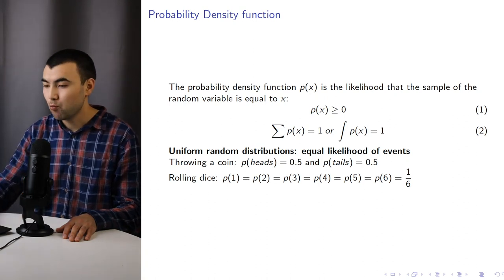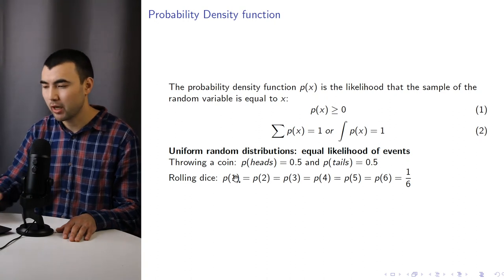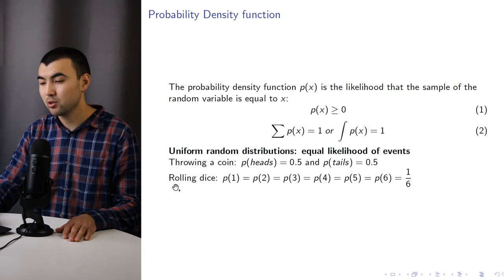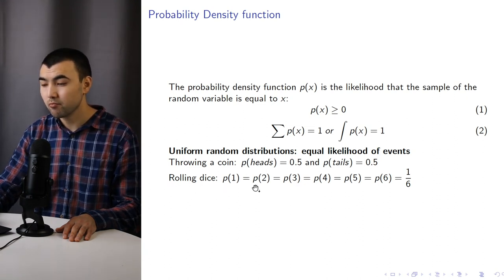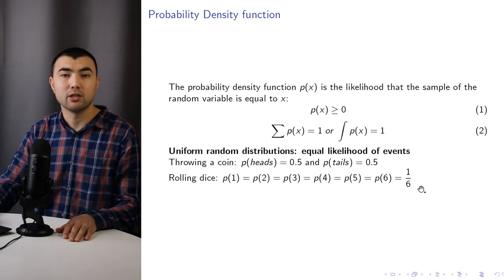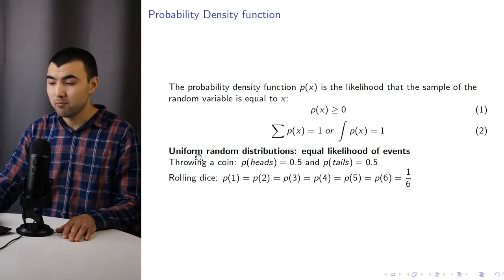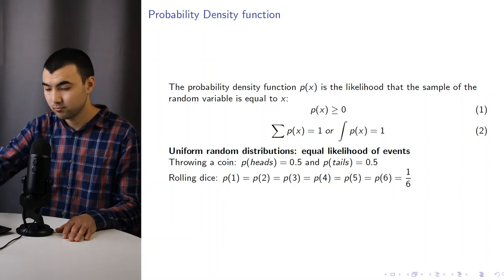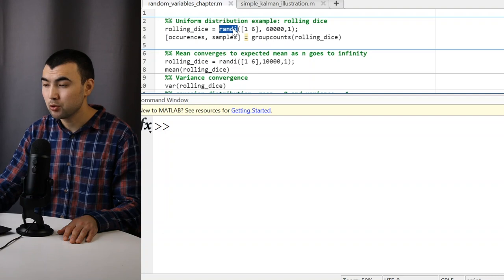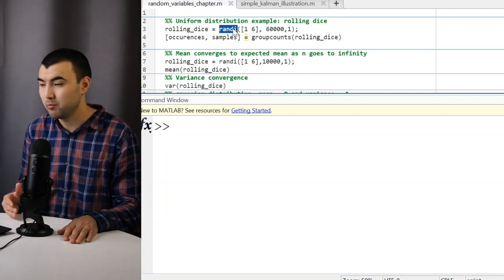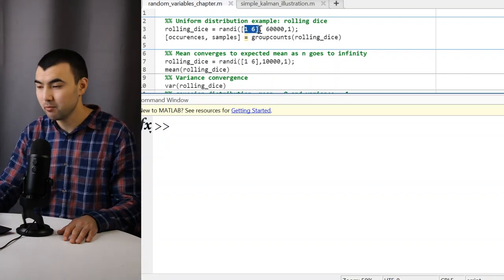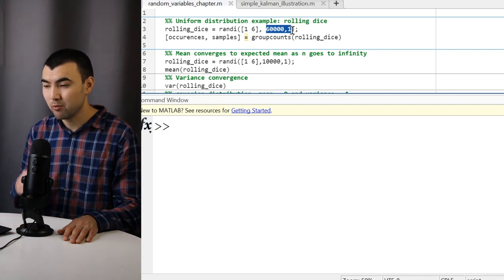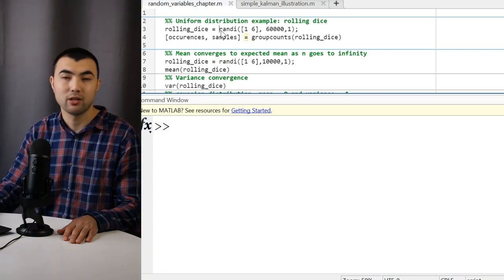Let's consider some examples. When throwing a coin, which is a classical example, we have two possible cases — heads and tails — and the probabilities are equal to 0.5. Another classical example is rolling a die: we have six possible cases, and the probabilities are equal to 1/6. These examples are part of uniform random distributions, where we have equal likelihood of events and samples. In MATLAB, we use the randi function to generate uniformly distributed integer random variables. The first argument is the range of random variables, and the second is the number of samples we want to generate — so we don't need to manually roll the dice 60,000 times.